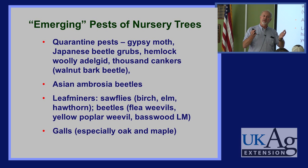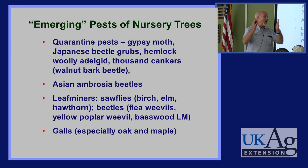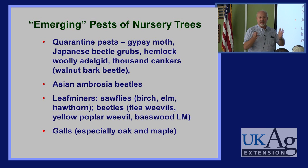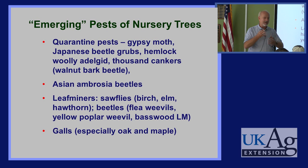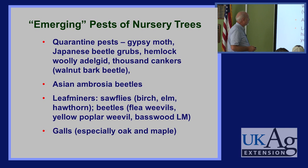The quarantine inspector digs up one of those trees, finds a grub, and says 'reject.' The quarantine is supposed to be for Japanese beetle, not the native ones. But inspectors don't always have the training or time — if it's a grub, they'll assume it's Japanese beetle. In Ohio, we have to be clean of all grubs, not just Japanese beetle. Japanese beetle in Ohio is actually becoming rare — other grubs have taken their place.